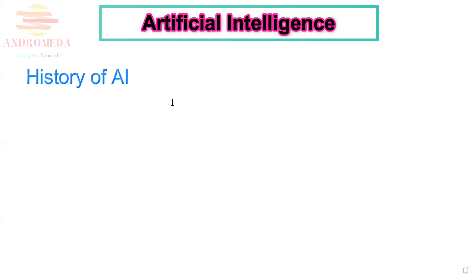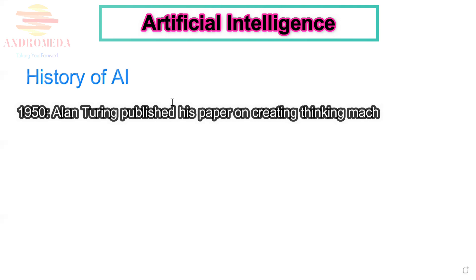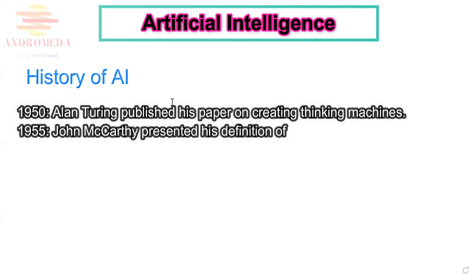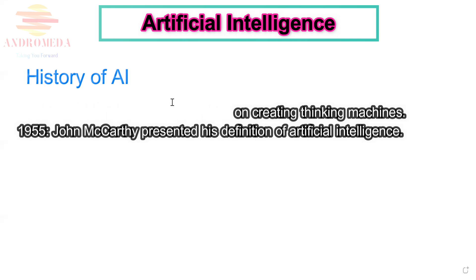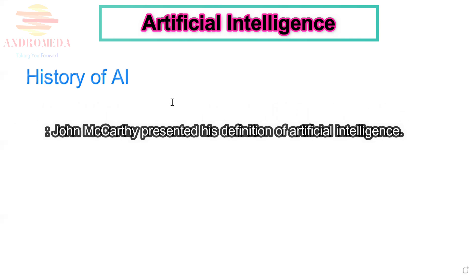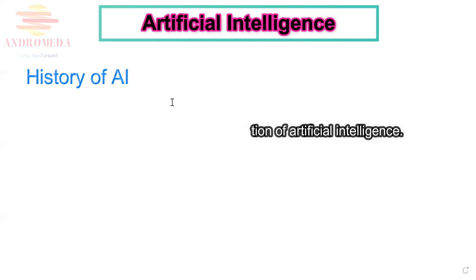Let's go to the history of AI. AI is a discipline of 60 years, which is a set of sciences, theories, and techniques. In 1950, Alan Turing published his paper on creating thinking machines. In 1955, John McCarthy presented his definition of artificial intelligence and coined the term AI. He is widely recognized as the father of artificial intelligence.